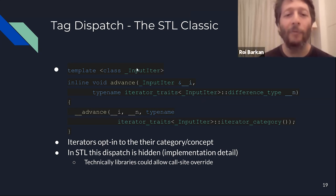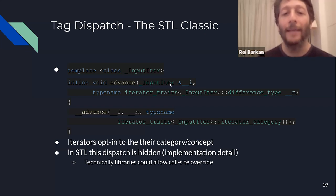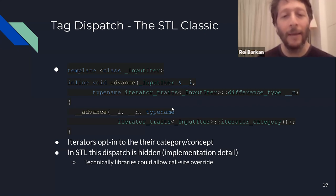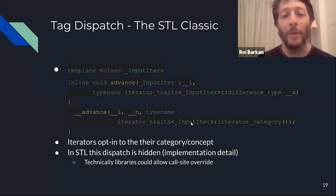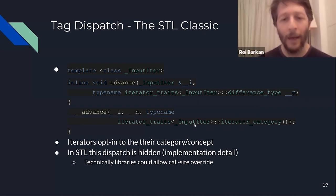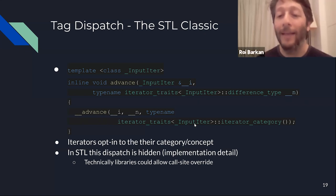In this example, the std::advance algorithm from the STL takes an iterator and wants to move N steps forward. The implementation calls an internal function with an extra argument — the iterator category. The STL defines a set of several iterator categories, much like concepts defined in the library.